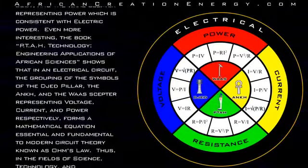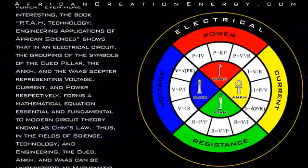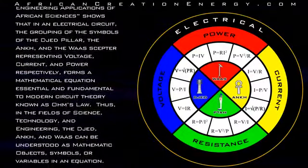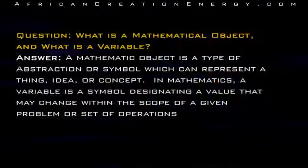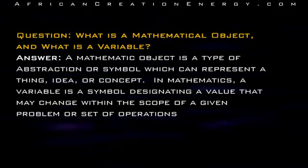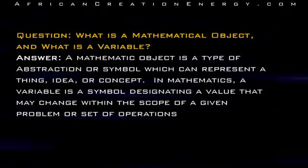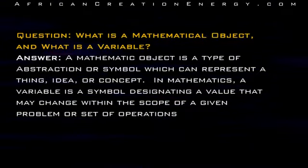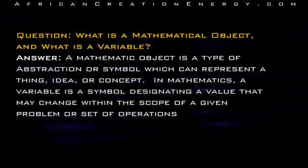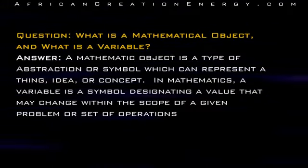Thus, in the fields of science, technology, and engineering, the Jed, Ankh, and Wa-S can be understood as mathematic objects, symbols, or variables in an equation. Question: What is a mathematical object, and what is a variable? Answer: A mathematic object is a type of abstraction or symbol which can represent a thing, idea, or concept. In mathematics, a variable is a symbol designating a value that may change within the scope of a given problem or set of operations.